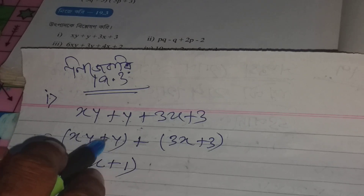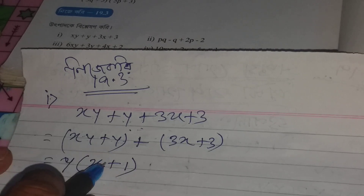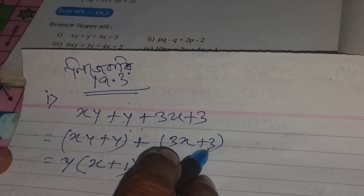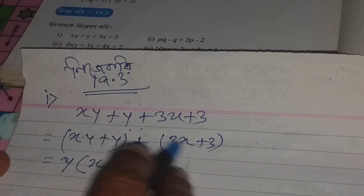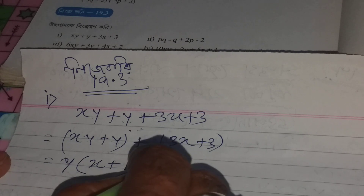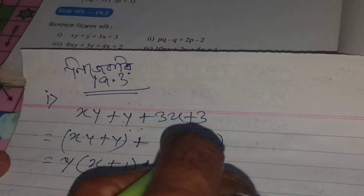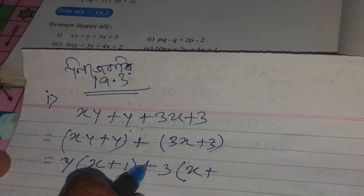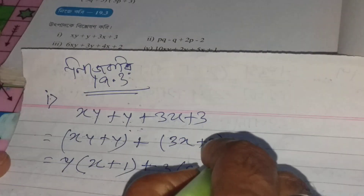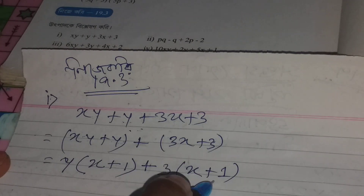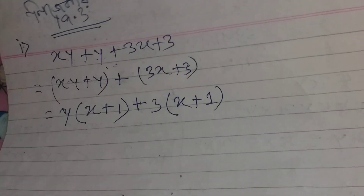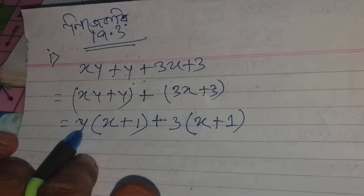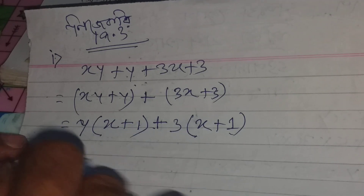Here, X plus Y is common. With 3X plus 3 taken out as a common factor, and placing the remaining terms in brackets — 3 times the bracket gives us the expression.